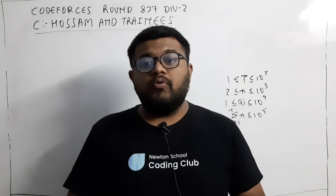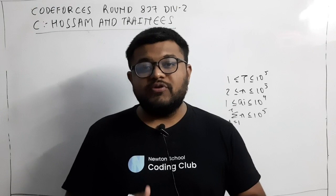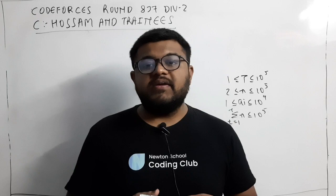Hi everyone, I am Karan Masaru. Welcome to this video. In this video I am going to discuss Codeforces Round 837 Division 2 Problem C, that is 'Awesome and Trainees'. Also before moving on, make sure you register for the upcoming coding contest by Newton School for some amazing experiences and prizes. Link is given in the description.